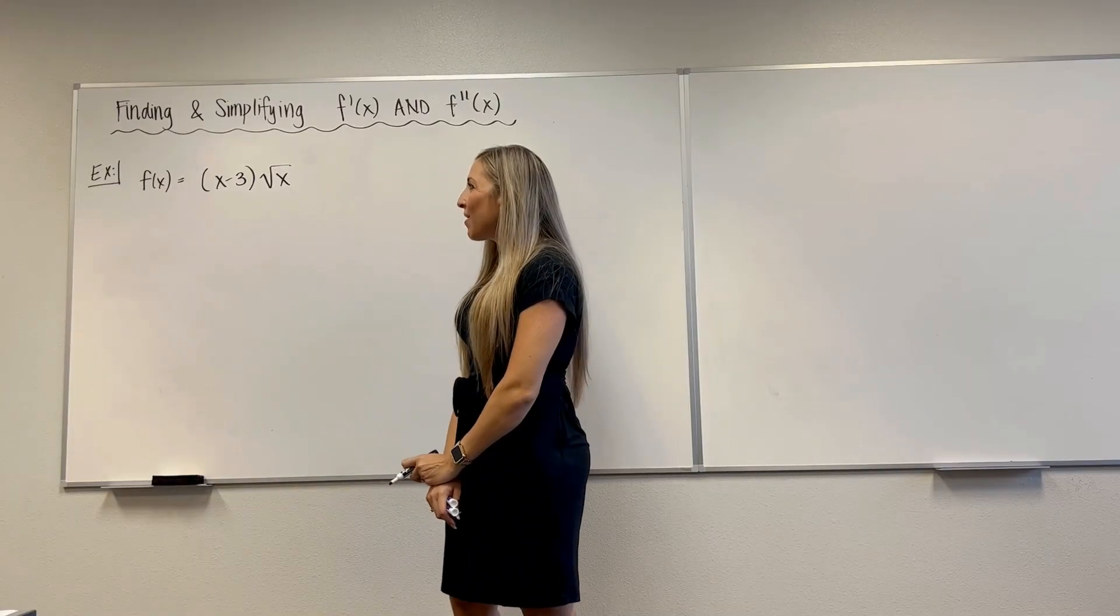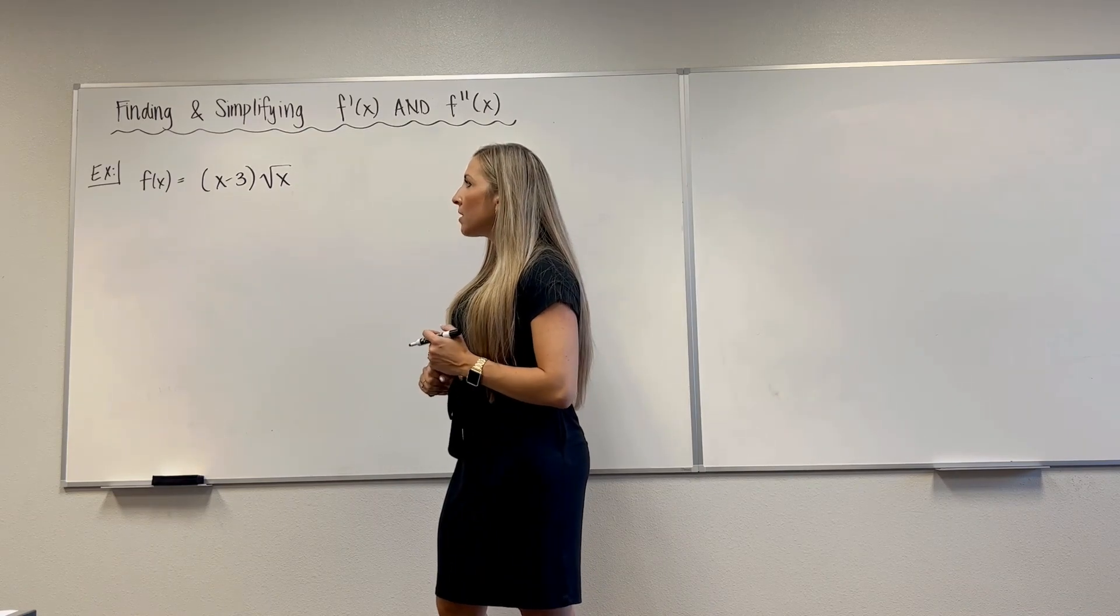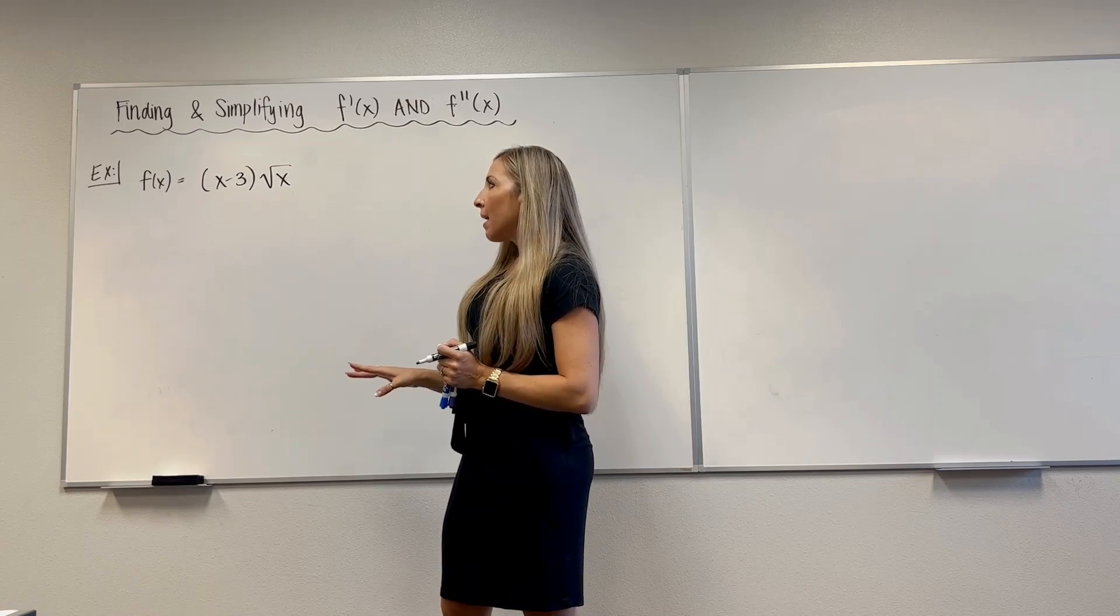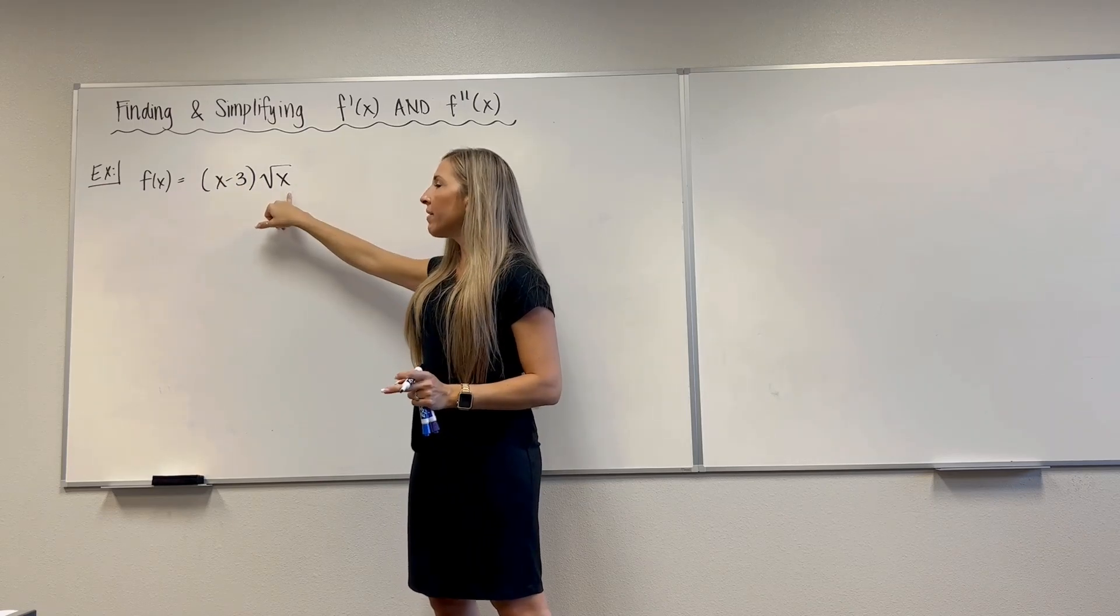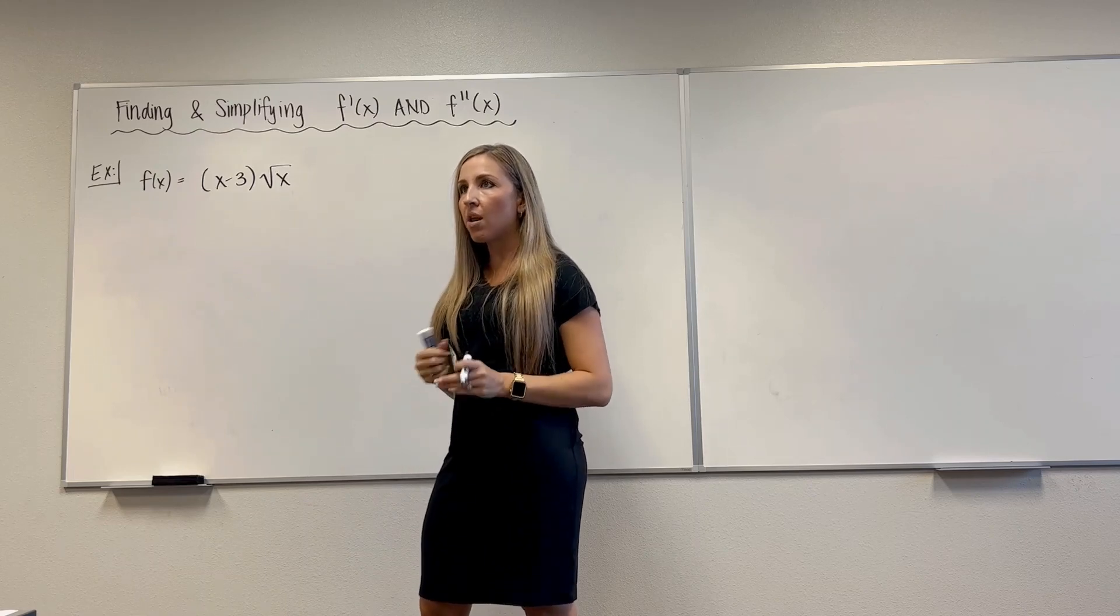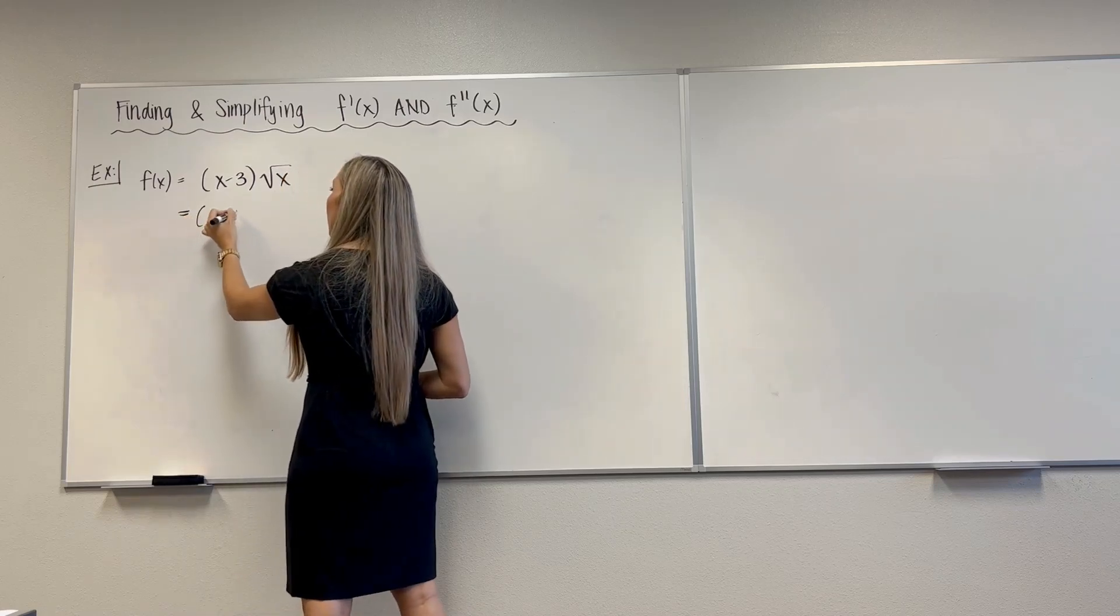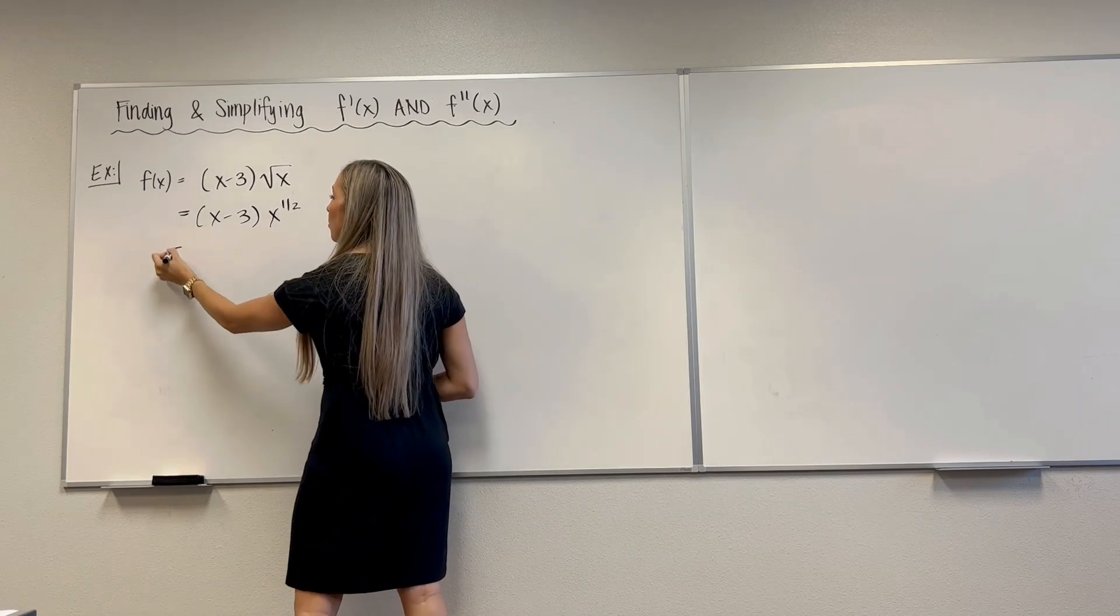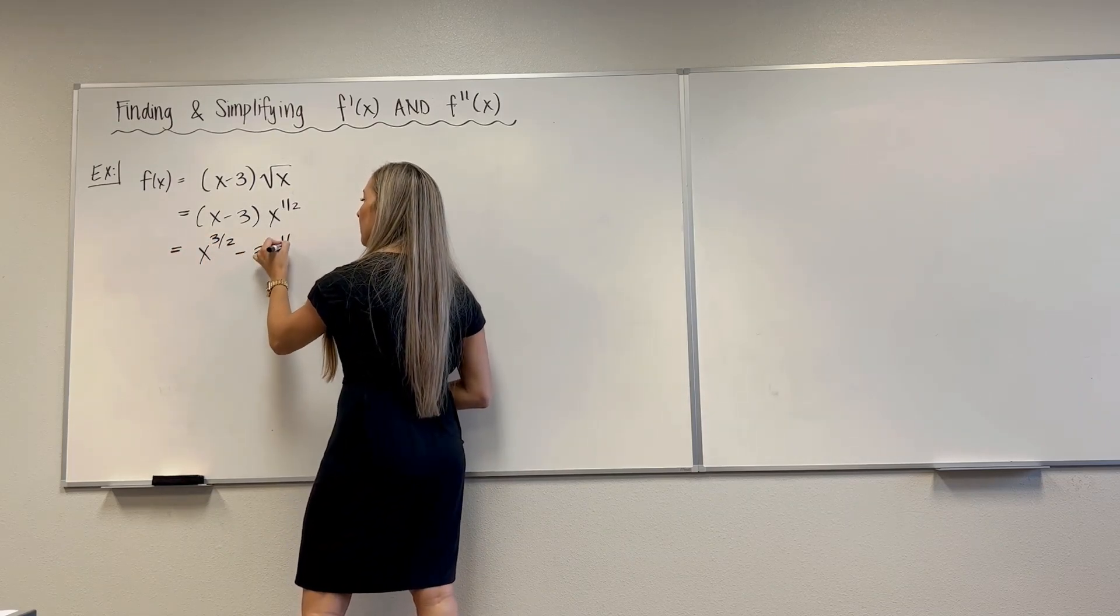Let's continue with another example. So next example, again, we're just going to find f prime, f double prime. Clean them up. f of x equals x minus 3 times the square root of x. Right off the bat, I'm looking at it, I'm not going to use the product rule. Because I can rewrite the square root of x as x to the 1 half and then distribute it through. Save product rule, when it's absolutely necessary, you know?